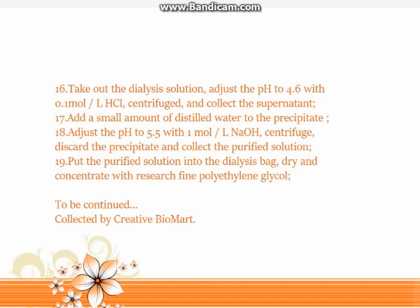Step 17: Add a small amount of distilled water to the precipitate. Step 18: Adjust the pH to 5.5 with 1 mol/L NaOH, centrifuge, discard the precipitate, and collect the purified solution. Step 19: Put the purified solution into a dialysis bag, then dry and concentrate using polyethylene glycol.